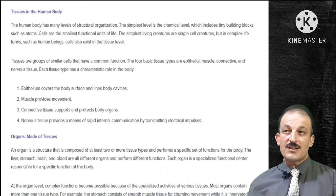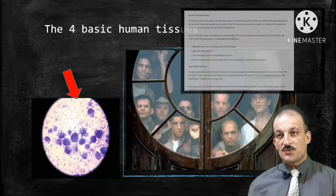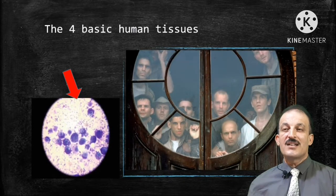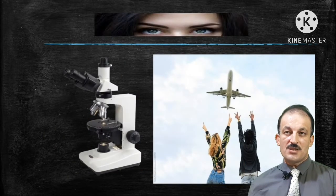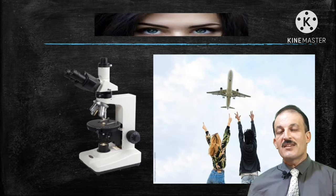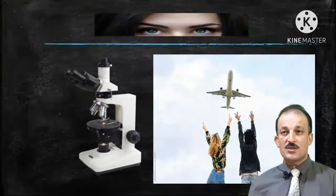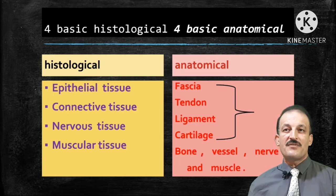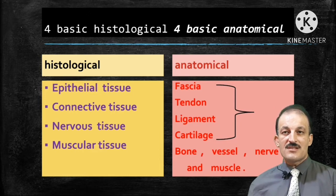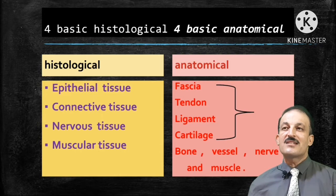Historically, tissues in the human body are divided into four classes: epithelial tissue, nervous tissue, connective tissue, and muscular tissue. This is microscopic examination. Another classification, the macroscopic or gross classification of human tissues, divides them into other classes such as bones, vessels, nerves, and muscles, which will be taken in the next lectures.